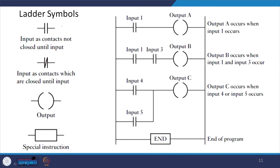The inputs and outputs are all identified by their addresses; the notation used depends on the PLC manufacturer. This is the address of the input or output in the memory of the PLC. For example, Mitsubishi PLCs precede input elements with X and output elements with Y, giving numbers such as X400 and X401 for inputs and Y430 and Y431 for outputs.